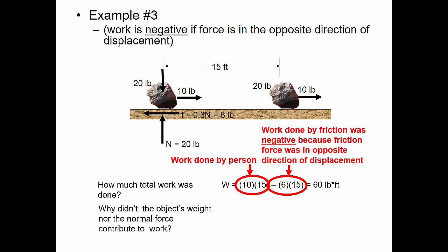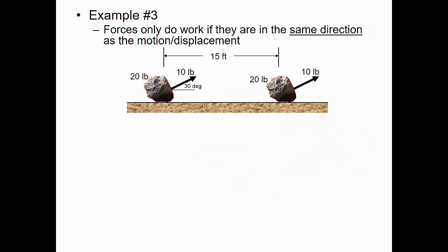Why didn't the object's weight or the normal force contribute to the work? They are not in the direction of displacement, so they don't directly contribute. However, the friction force depends on the normal force, so indirectly the normal force can contribute. Forces only do work if they're in the same direction as the motion.